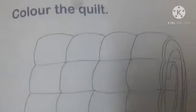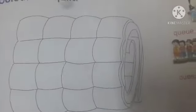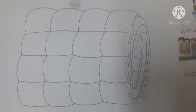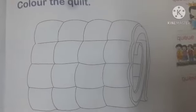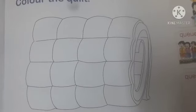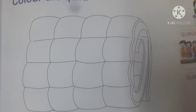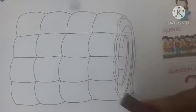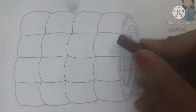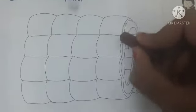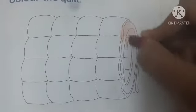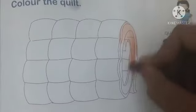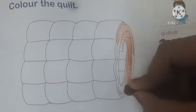What you see here is a warm quilt. So first we do an activity — in this activity, you color this quilt. You choose your favorite color to color this quilt. I choose brown color to color the quilt. To color it, first you outline the quilt slowly.